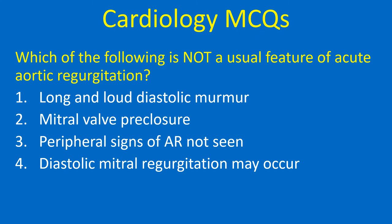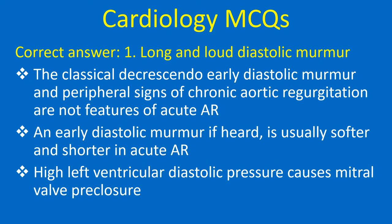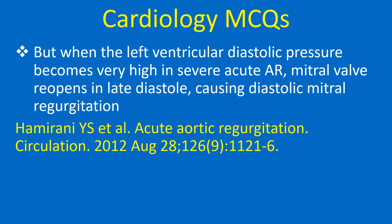Which of the following is not a usual feature of acute aortic regurgitation? 1. Long and loud diastolic murmur, 2. Mitral valve pre-closure, 3. Peripheral signs of AR not seen, 4. Diastolic mitral regurgitation may occur. Correct answer: 1. Long and loud diastolic murmur. The classical decrescendo early diastolic murmur and peripheral signs of chronic aortic regurgitation are not features of acute AR. An early diastolic murmur, if heard, is usually softer and shorter. High left ventricular diastolic pressure causes mitral valve pre-closure. When LV diastolic pressure becomes very high in severe acute AR, the mitral valve reopens in late diastole, causing diastolic mitral regurgitation.